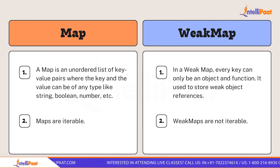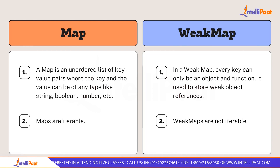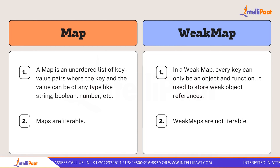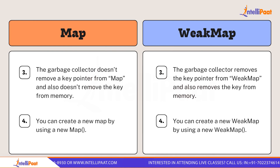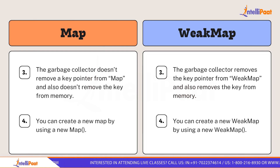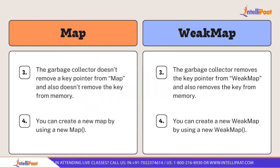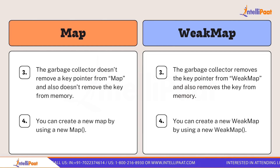WeakMap is also an unordered list but you can only map objects in it. Maps are iterable — you can directly iterate through the whole map — but WeakMap has no iteration options. For Map, the garbage collector does not remove mapped data even if you're not using your map. But for WeakMap, once your reference is deleted your pointer is also deleted. If you assign a key object to null, the key values will also be lost.